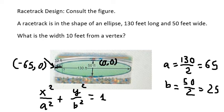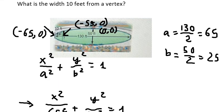Now they go behind the vertex. That means we need to go 10 feet from here. So the point of this location, we have (-55, 0). So because we have x equal to -55, from x equal to -55, we can find the point.